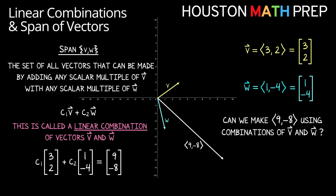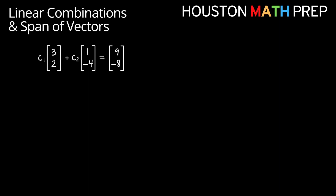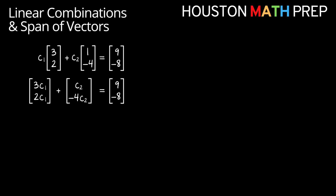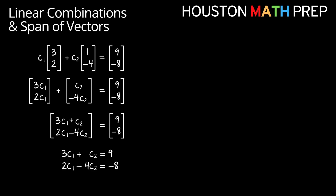We want to see if we can find a way to add some multiples of v and some multiples of w to get 9 negative 8. The trick is to figure out if there are c1 and c2 values that make it work. We distribute the scalars into the vectors on the left side, then add the entries in the same positions, giving us one vector on each side. Setting the corresponding entries equal on both sides gives us a system of equations with c1 and c2 in it.